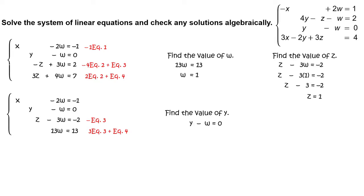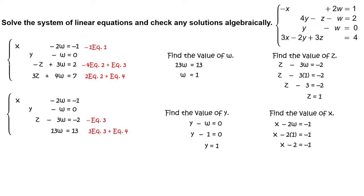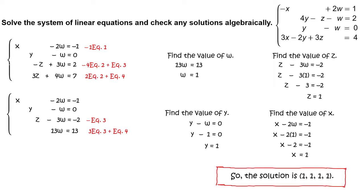Find the value of y. Write y minus w equals 0, substitute 1 for w, and simplify to get y equals 1. Find the value of x. Write x minus 2w equals negative 1, substitute 1 for w to get x minus 2 equals negative 1, then add 2 to each side to get x equals 1. So the solution is (1, 1, 1, 1).